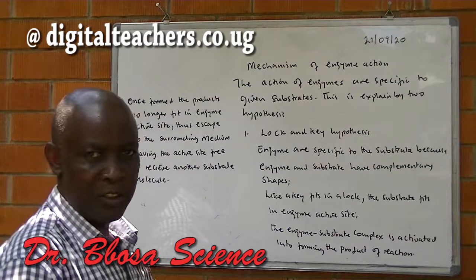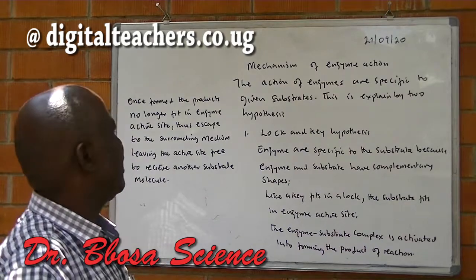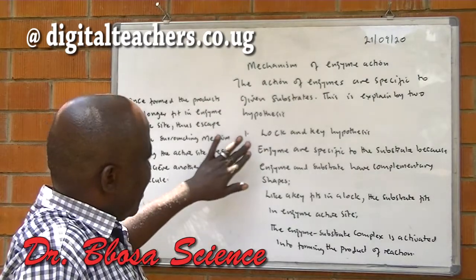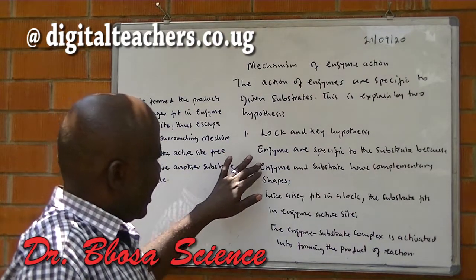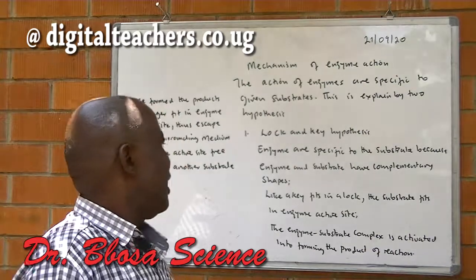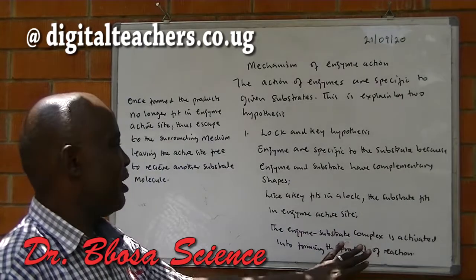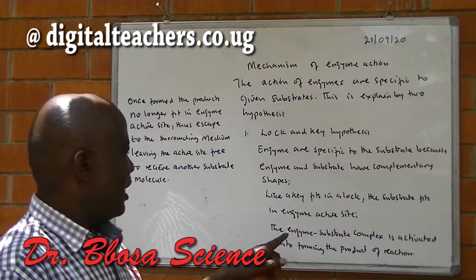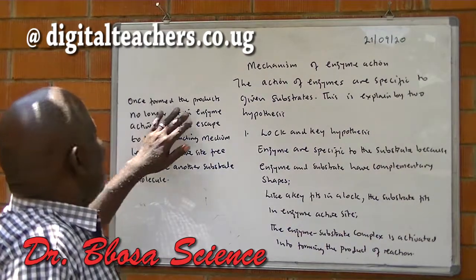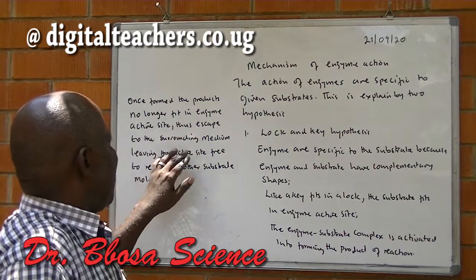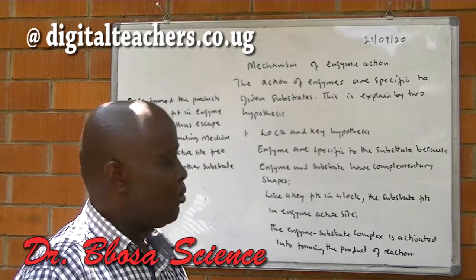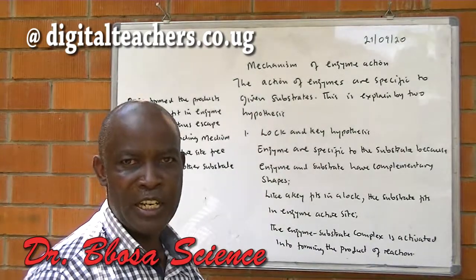Mechanism of enzyme action. The action of enzymes is specific to the substrate. This is explained by two hypotheses. The most popular is the lock and key hypothesis. Here, enzymes are specific to the substrate because enzymes and the substrate have complementary shapes. Like a key fits in a lock, the substrate fits in the enzyme active site. The enzyme-substrate complex is activated into forming the product. Once formed, the product is no longer able to fit in the enzyme active site and escapes to the surrounding media, leaving the active site free to receive another substrate.